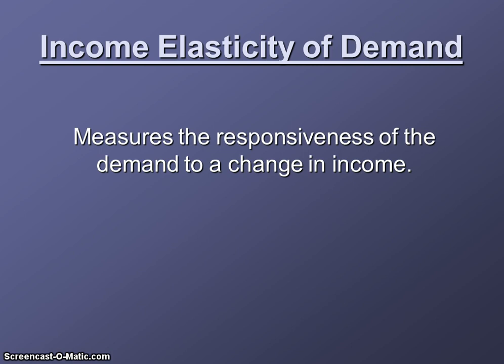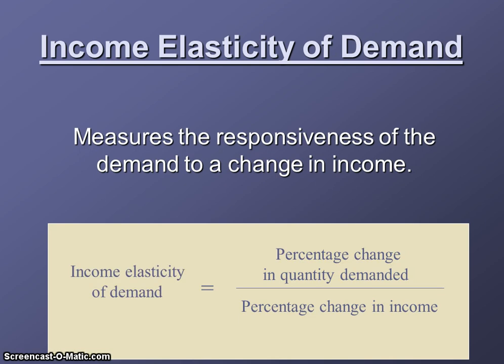We can also tell by the answer we get when we do this calculation if the good is a necessity or a luxury. The formula is the same, but now instead of price, we're using income — because income is the variable we're studying. Income elasticity of demand is the percentage change in the quantity demanded of whatever item we're analyzing over the percentage change in consumer income. It's still dollars in the denominator, but now instead of price, it's income.